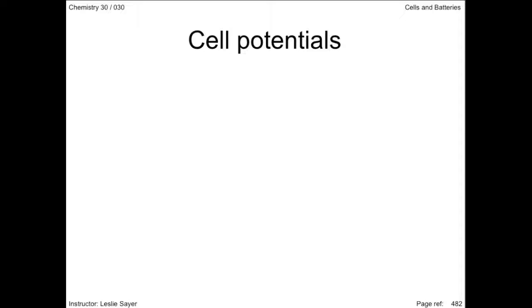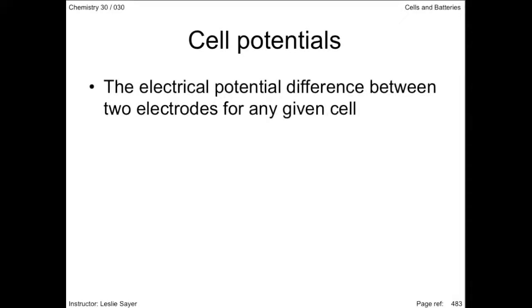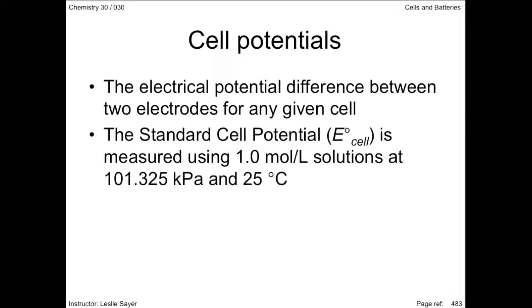The difference in charge between the two electrodes is called the electrical potential difference, and is measured in volts. For any given cell, the electrical potential difference between the two electrodes is called the cell potential. The standard cell potential is an internationally agreed set of standard conditions for reporting cell potentials.